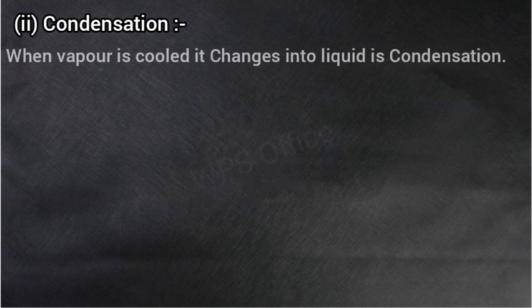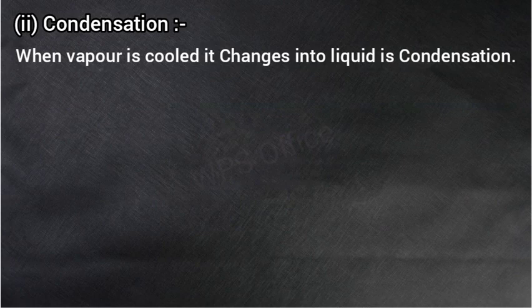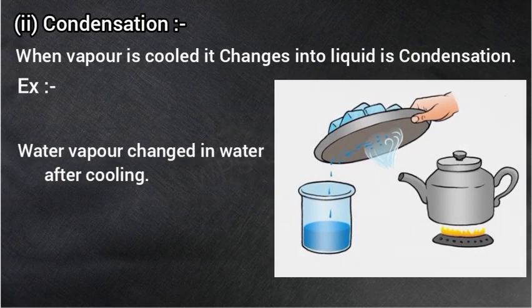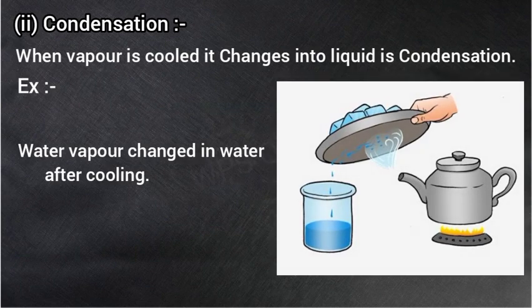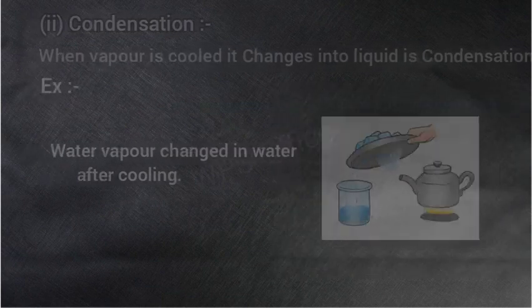And the next change is condensation — यानि संघनन. When vapor is cooled, it changes into liquid — it is condensation. जब किसी वाष्प को ठंडा किया जाता है, तो यह पुनः द्रव में बदल जाता है, इसे condensation या संघनन कहते हैं. For example: water vapor changes into water after cooling — जलवाष्प को यदि ठंडा कर दिया जाए, तो वह पुनः जल या पानी में परिवर्तित हो जाता है.